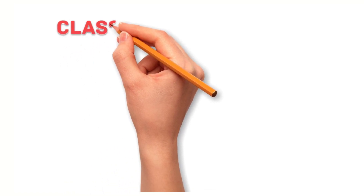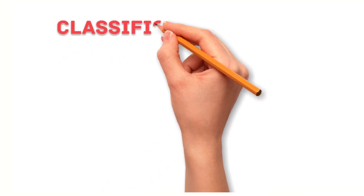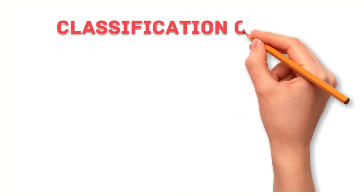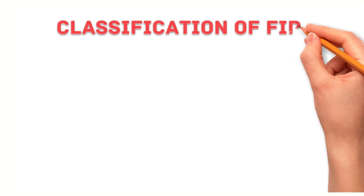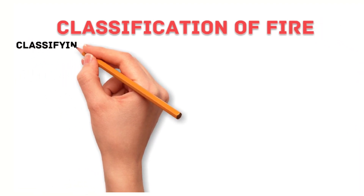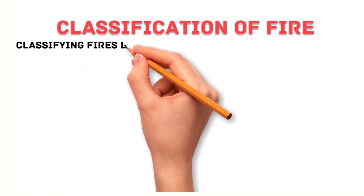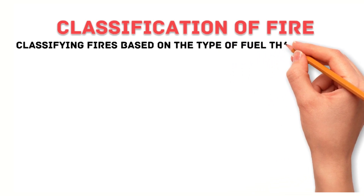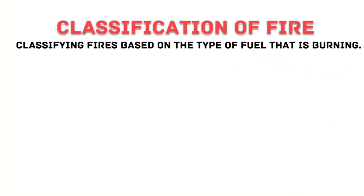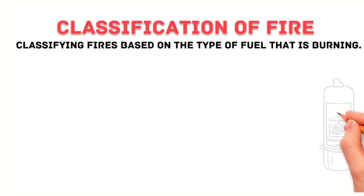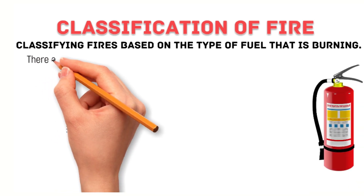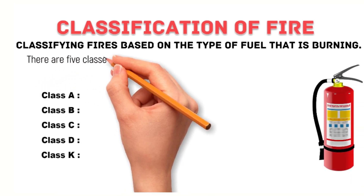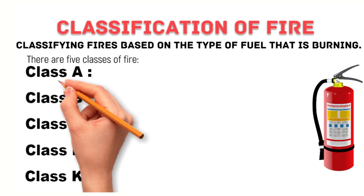Hi everyone, and welcome to my channel. Today I am going to be talking about the classification of fire. Fire classification is a system for classifying fires based on the type of fuel that is burning. This classification system is important for choosing the right fire extinguisher to extinguish a fire. There are five classes of fire.